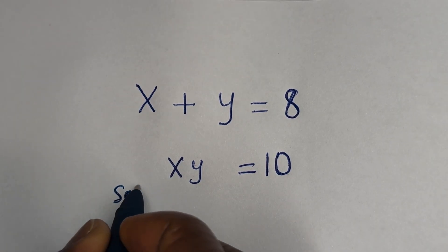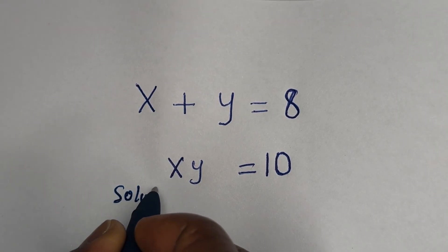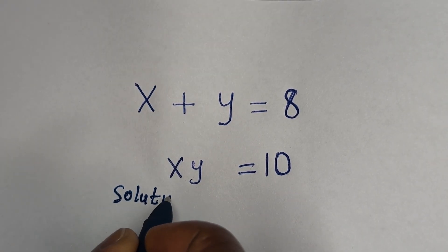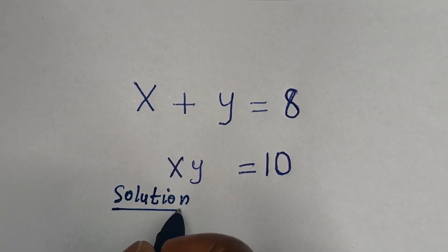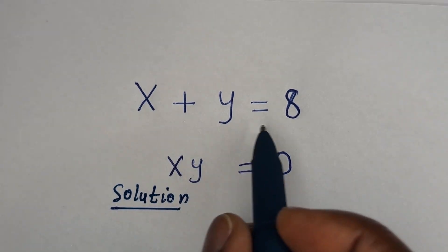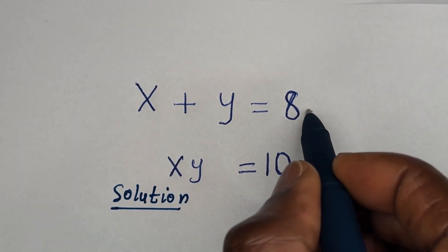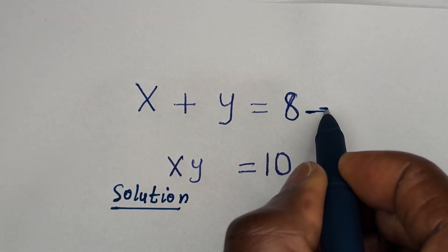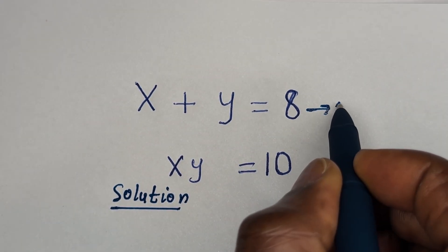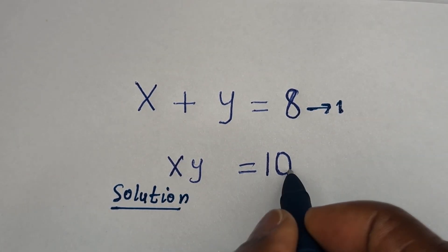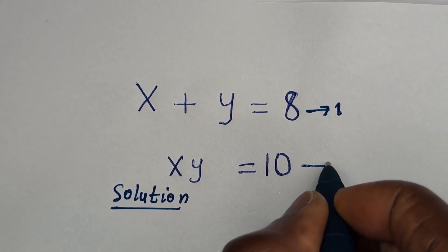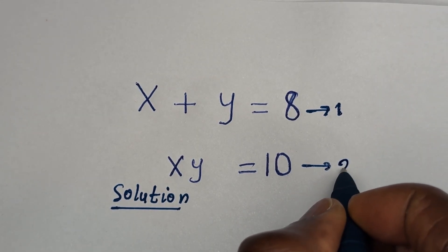Solution. x plus y is equal to 8 — let us call this equation 1. Then x times y is equal to 10 — let us call this equation 2.